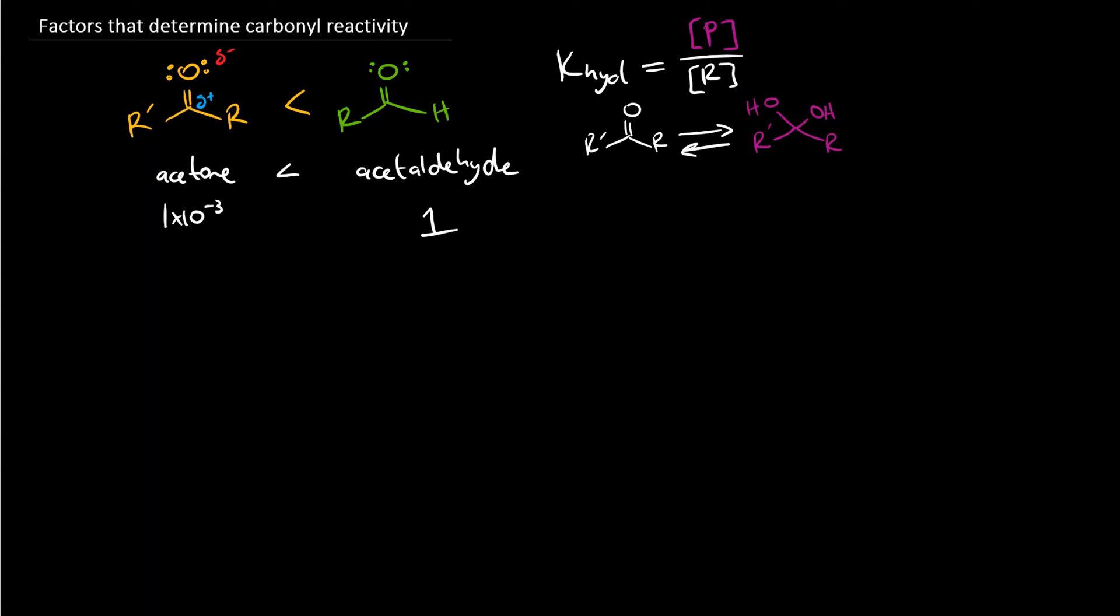So let's look at one example here. If we're given the following compounds, so this is butanil, and we compare that to two other butanil derivatives. But the only difference here is that at the beta carbon I put chlorine, on the alpha carbon I put chlorine, and then here I just don't put anything. So this is just my pure carbonyl. How do we predict the reactivity?